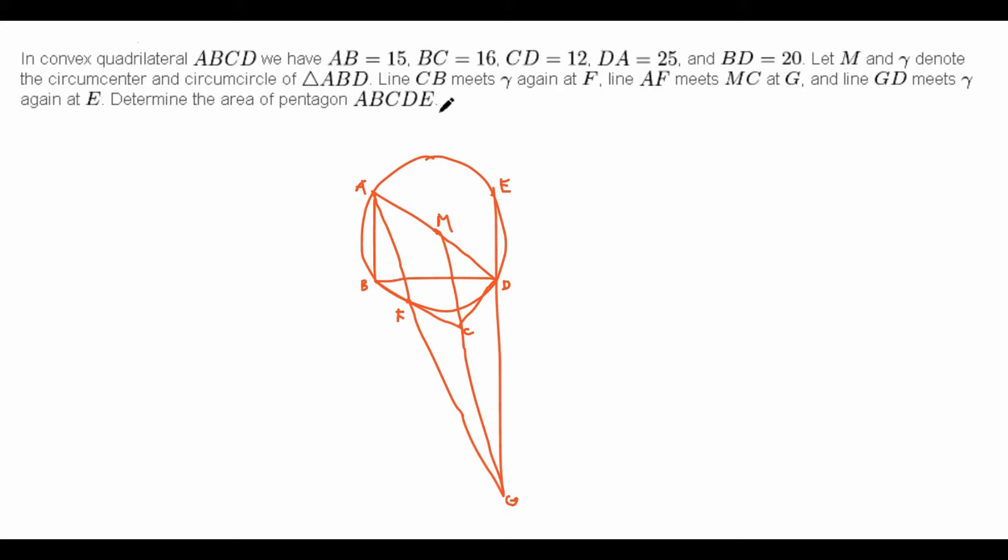So first off, when you look at these side lengths, you might give a second thought about if they really are random or not. Because, look, 15, 16, 12, 25, 20, these are all pretty nice sides. In fact, they all seem to either have factors of 3, 4, or 5, which suggests to us that perhaps the triangles that we're looking at aren't so random in the first place.